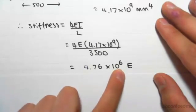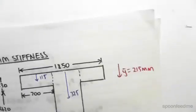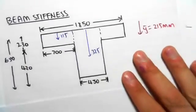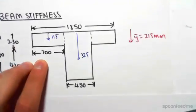Now for the beam, this is our beam over here. Some of the things I've done is I've worked out that distance 700, which is going to be 1850 minus 450.